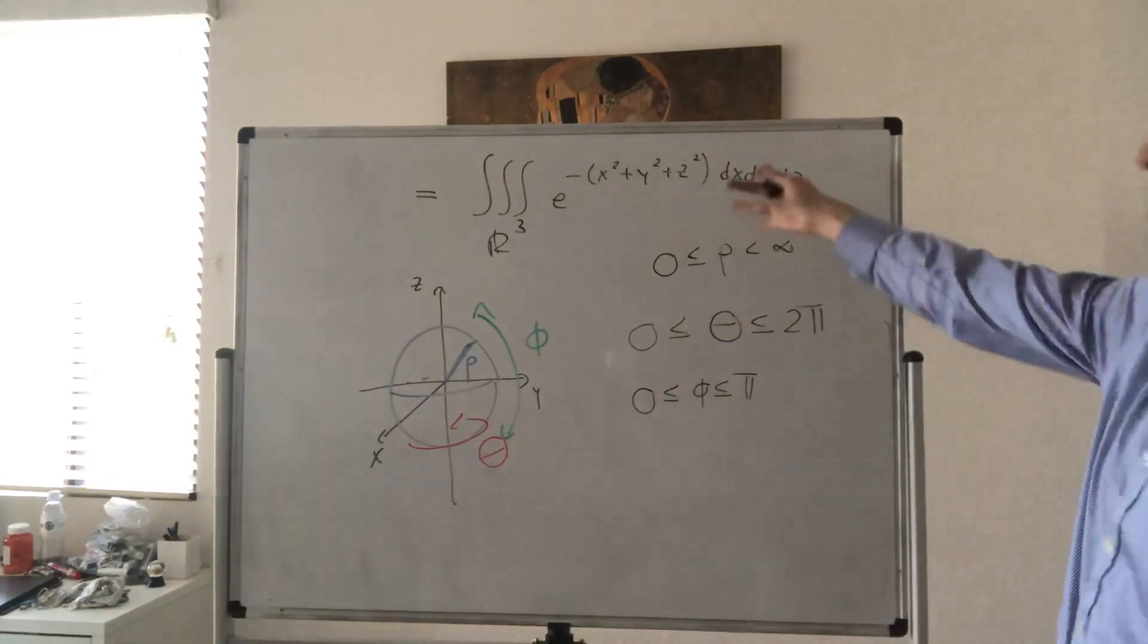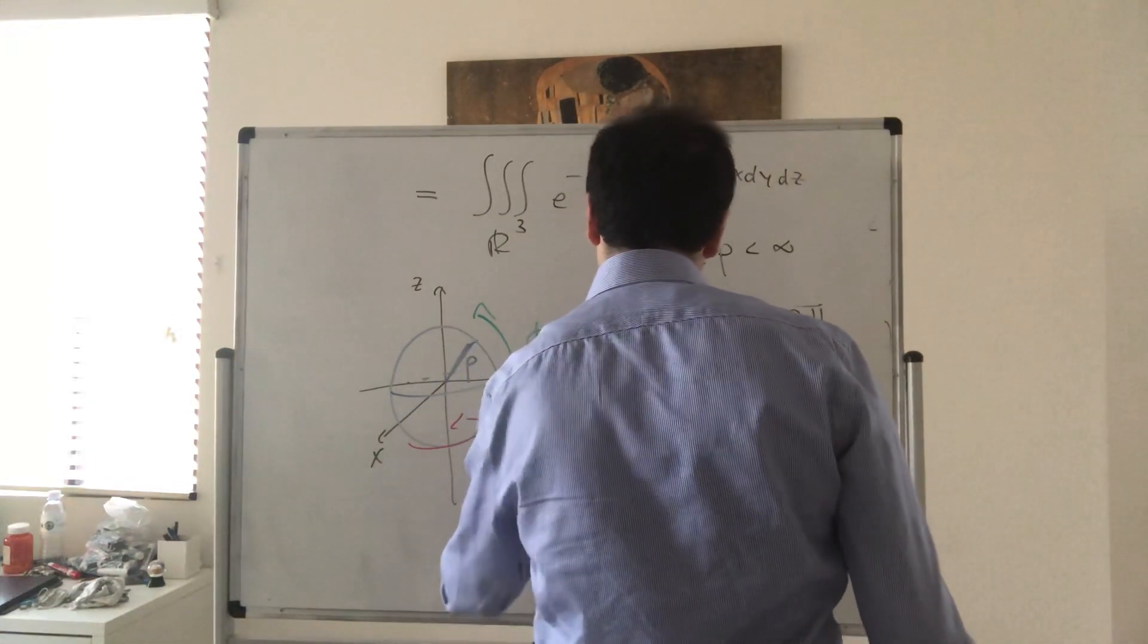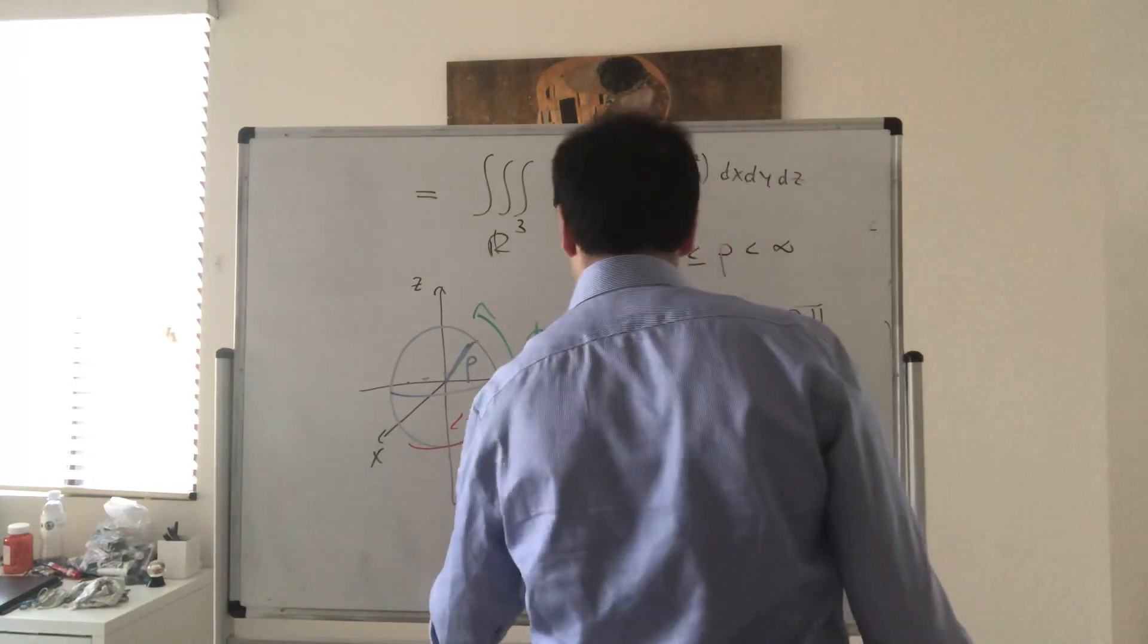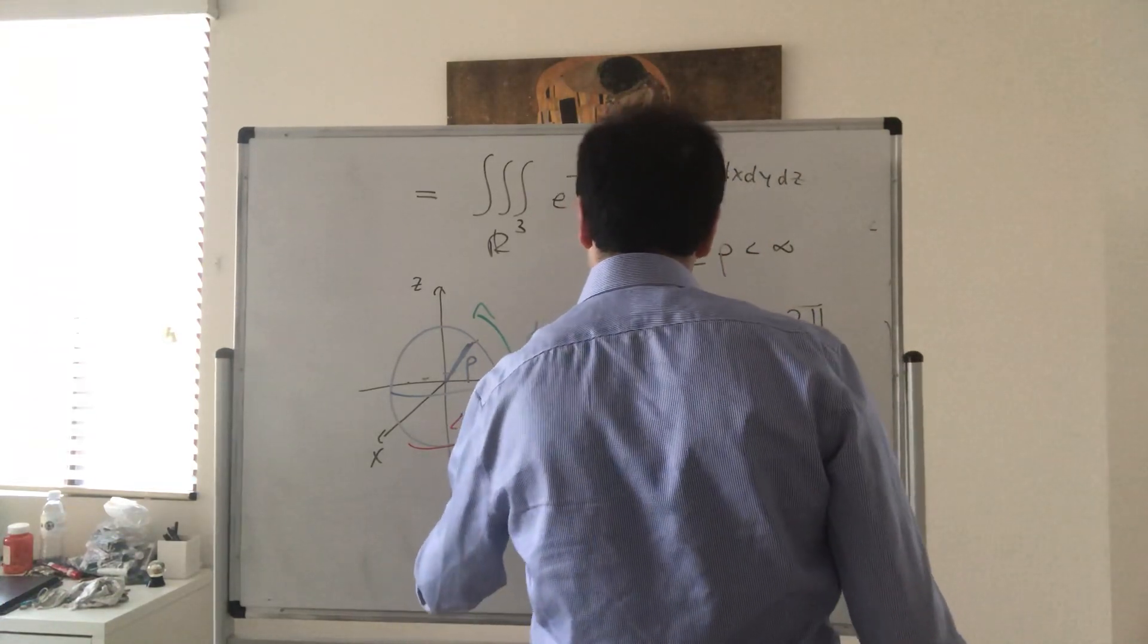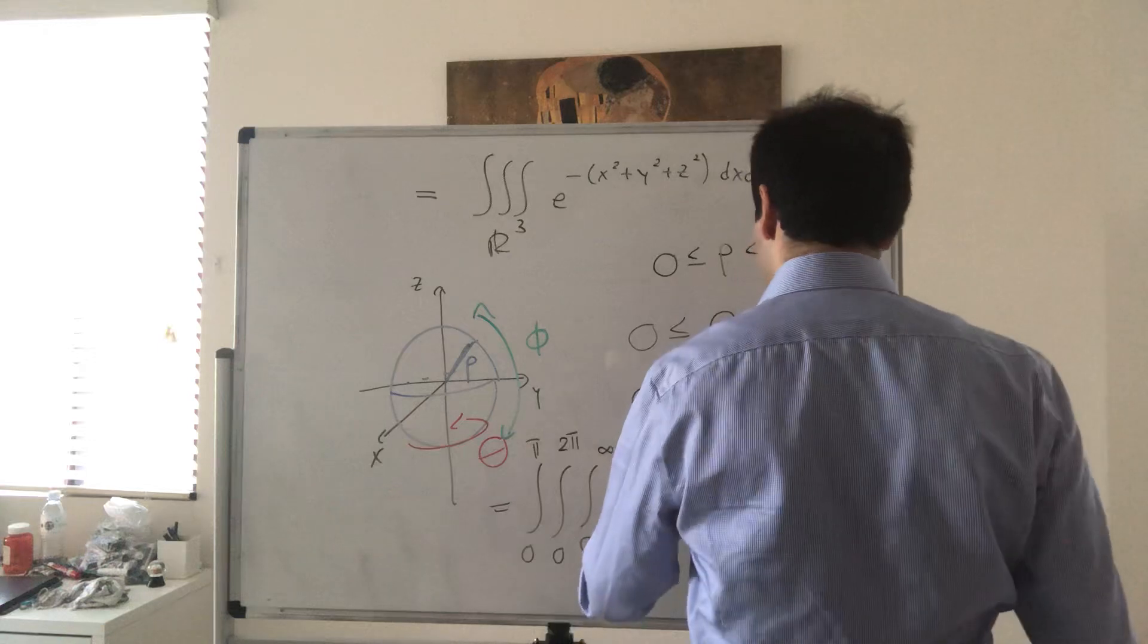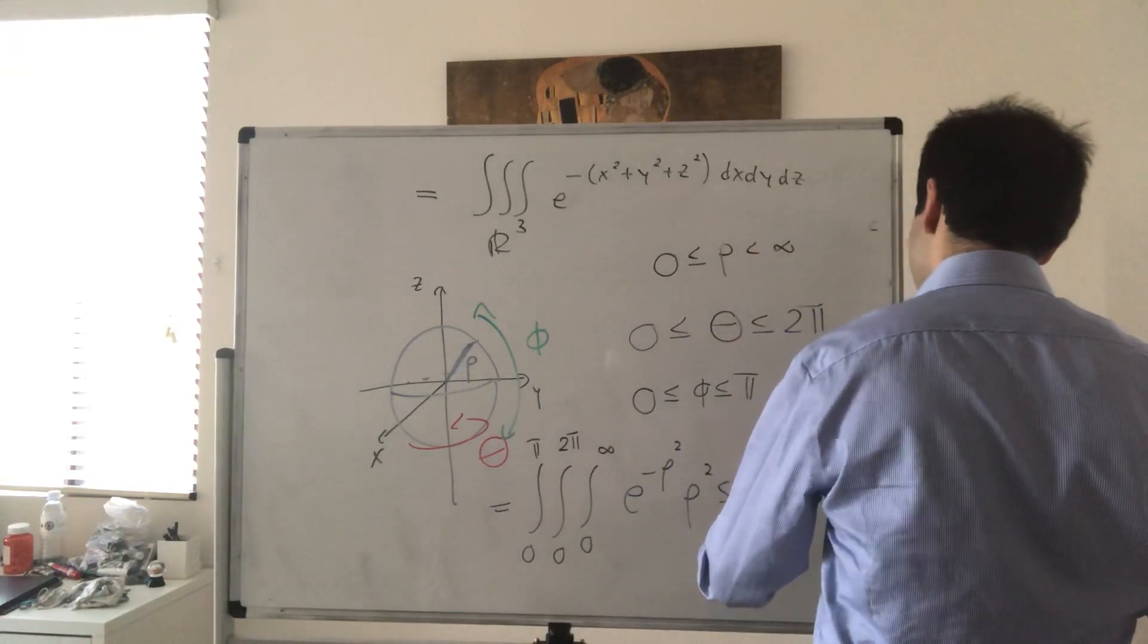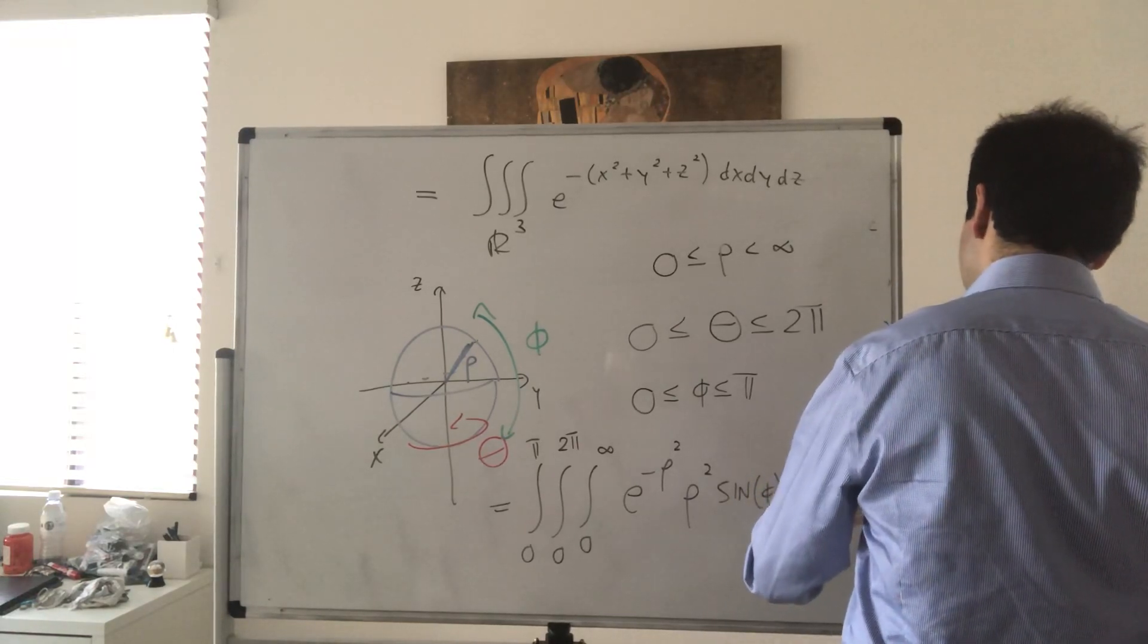So in other words, this integral can just be written as the integral from 0 to infinity, 0 to 2 pi, and 0 to pi, of e to the minus rho squared, and then just the Jacobian, rho squared sine of phi, d rho d theta d phi.